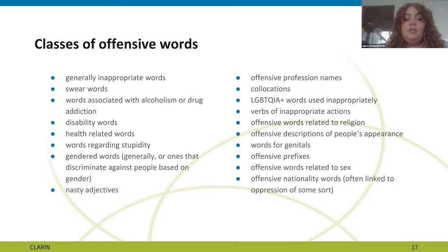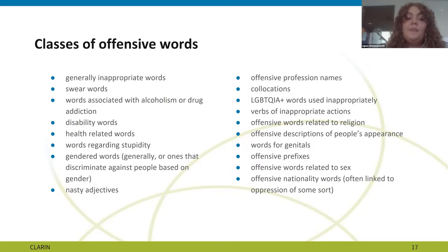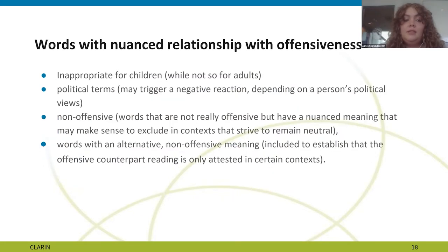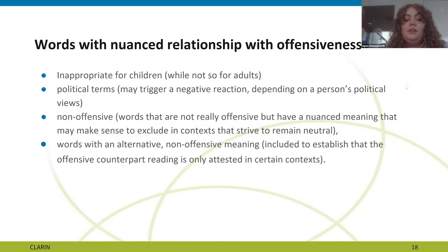The main classes into which the taboo words were classified are somewhat varied: some words are classified by meaning — for example, offensive profession names and offensive disability words; some by word category, like nasty adjectives and verbs of inappropriate actions; and others by usage, like swear words. These categories were not decided beforehand but emerged throughout the data collection process. Additionally, some words are not necessarily taboo but contain loaded meaning and are better excluded from texts in certain situations, such as texts meant for children.